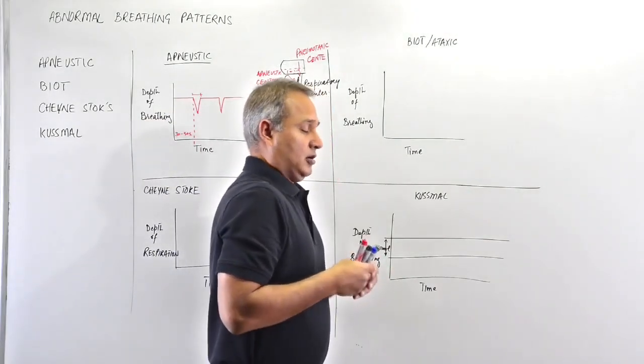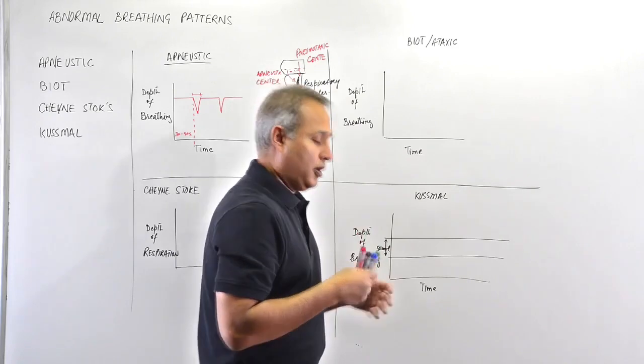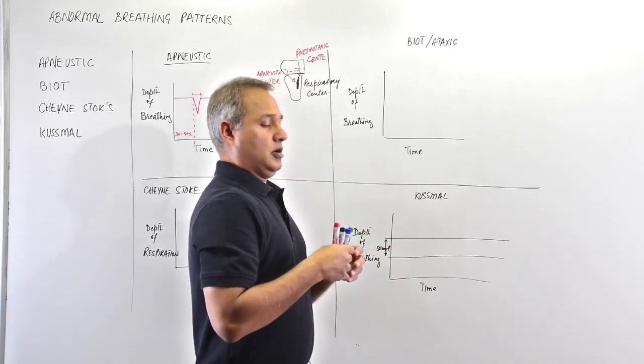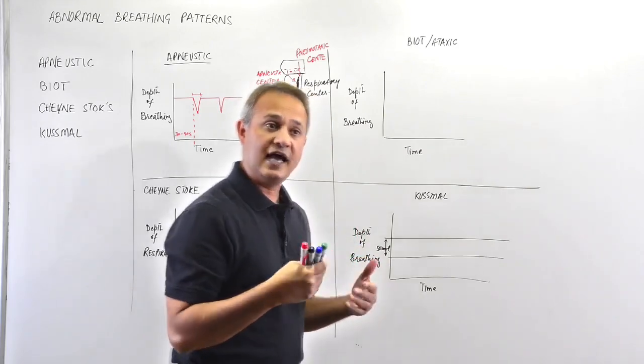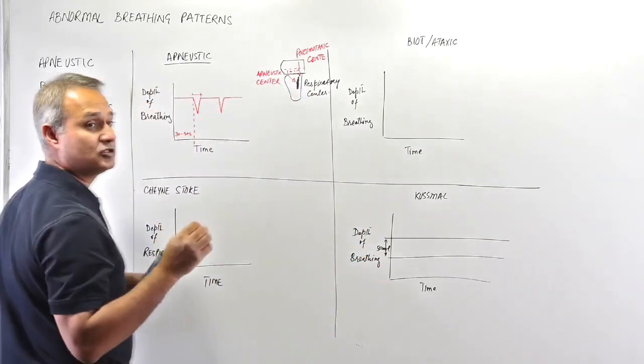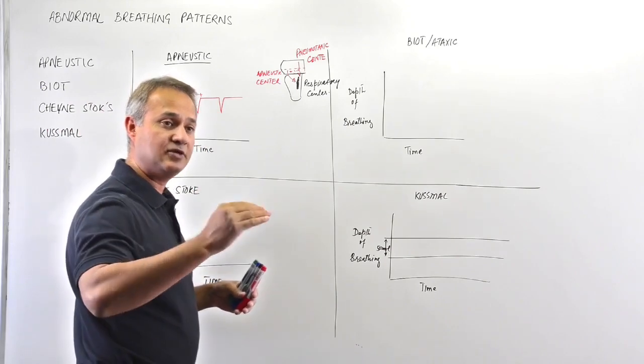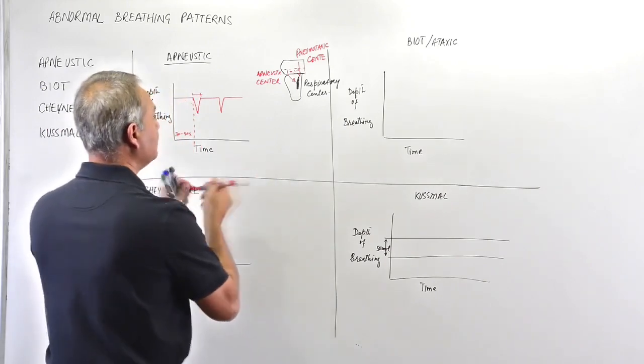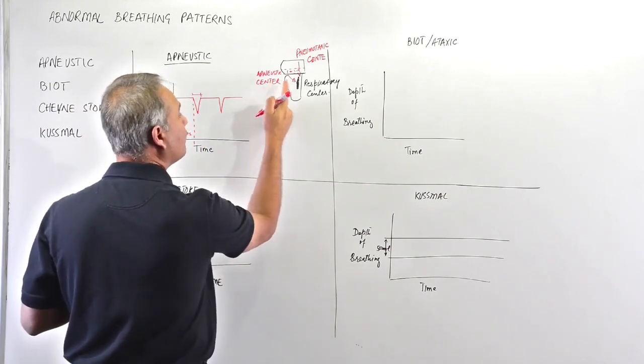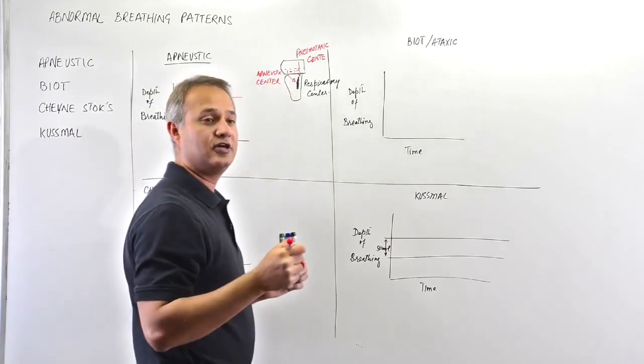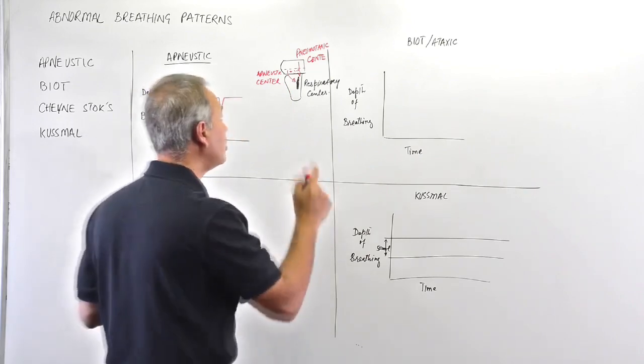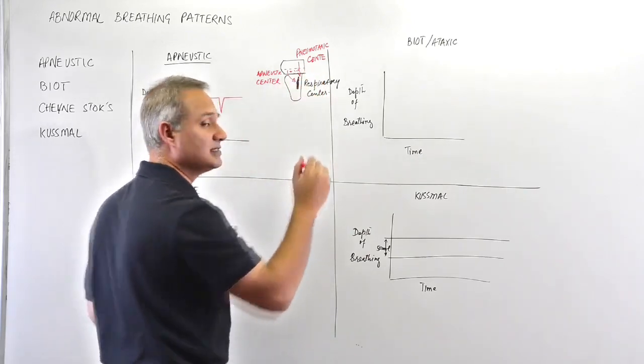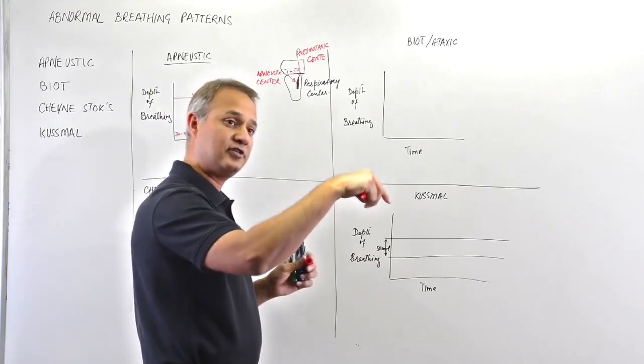That is apneustic breathing. What happens is it's normally because of damage to the lower part of the pons. Why is that? Because the apneustic center's function is to switch off - not the inspiration, but to switch off the pneumotoxic message that switches off the inspiration.